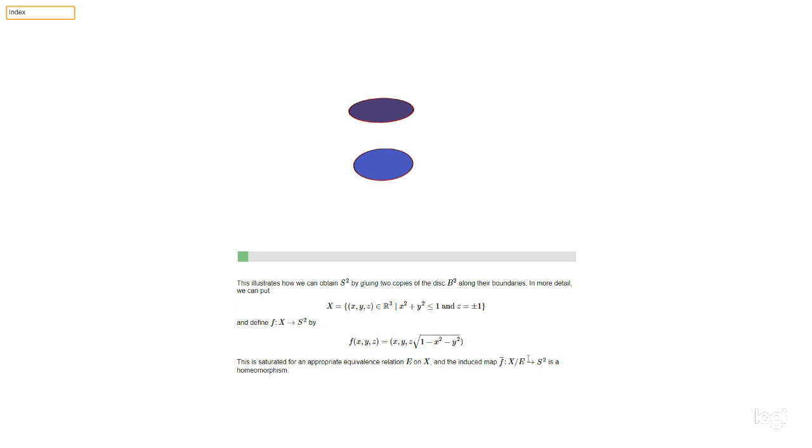That's also kind of more or less automatic in this case, because it's easy to see that this quotient space X mod E is compact, because X is compact, and any quotient of a compact space is compact. And then S² is a metric space, so in particular, it's Hausdorff. And there's this general useful fact that if you've got a continuous bijection from a compact space to a Hausdorff space, then the inverse is also continuous. And so you've got a homeomorphism.